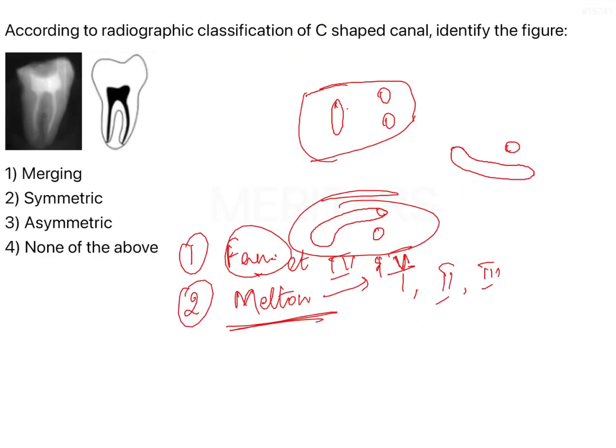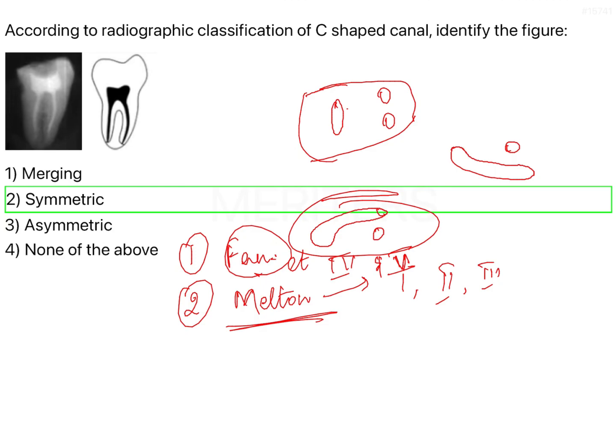The answer to the question is symmetric, because as you can see, the canals are symmetric on both sides — which corresponds to type 2.